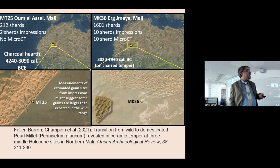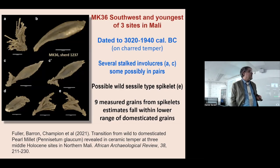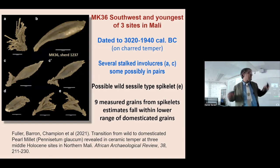From MK-36, which is a slightly later site at around 3,000 to 2,500 BC, you get a mixture of wild types and domesticated types, as well as ones you can't tell, and some with paired spikelets — a kind of domestication trait. So the picture from AZ-22 is entirely wild pearl millet, and the later site MK-36 shows a mix, suggesting domestication is underway. Unfortunately, the dates are old dates based on charcoal, so it would be nice to have new dates on these sites.